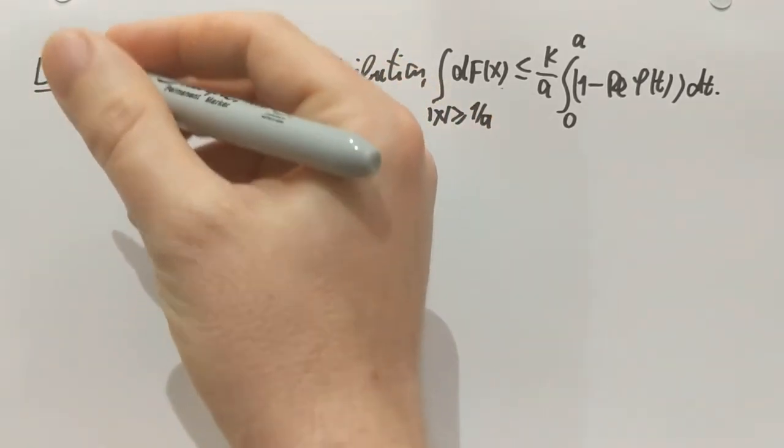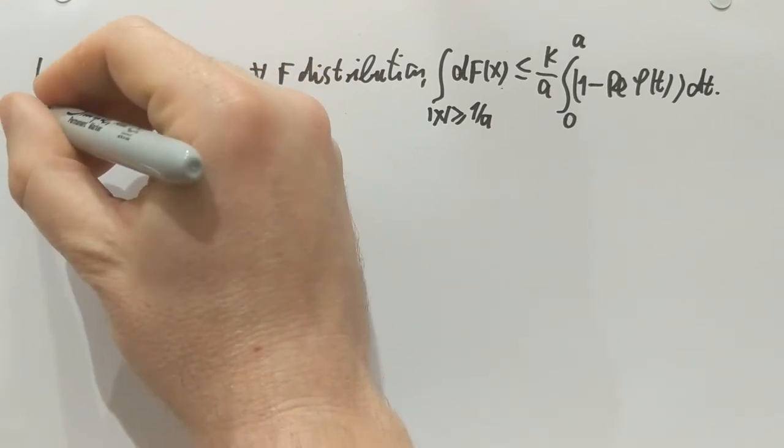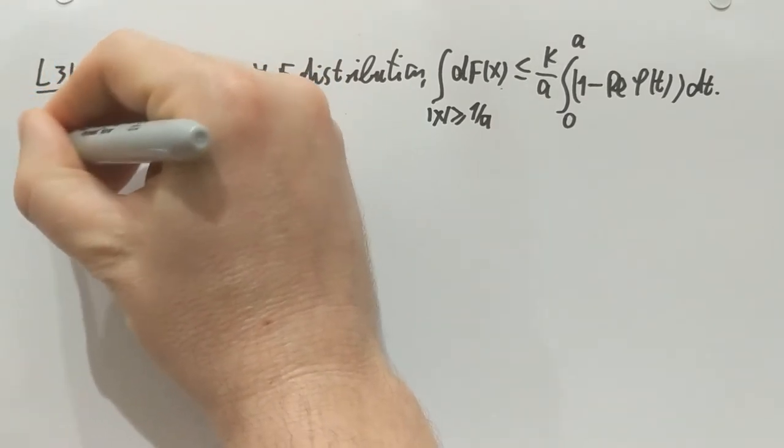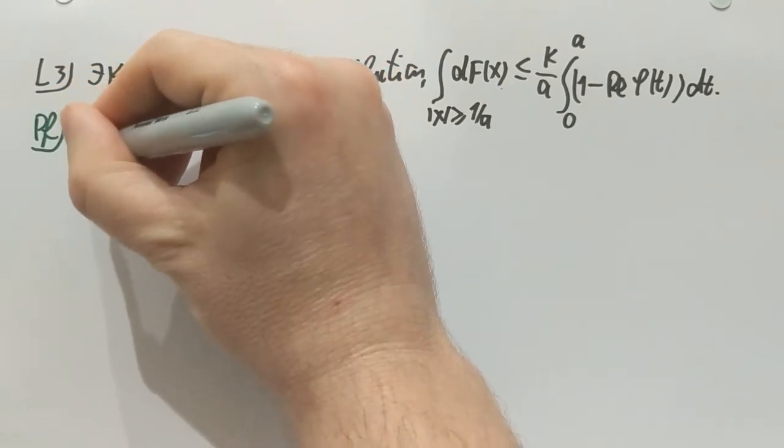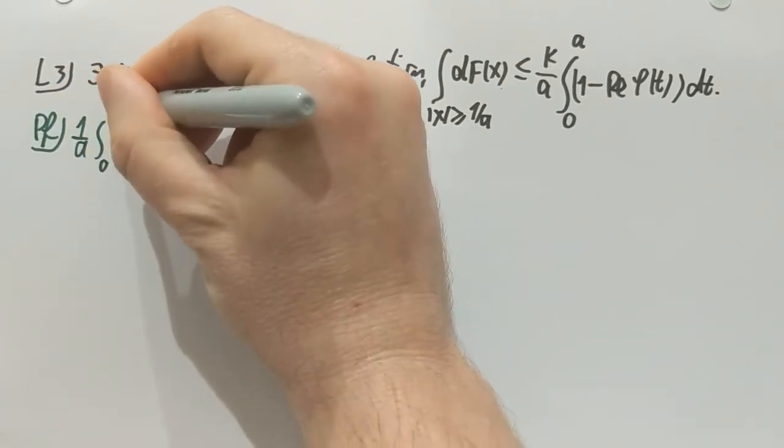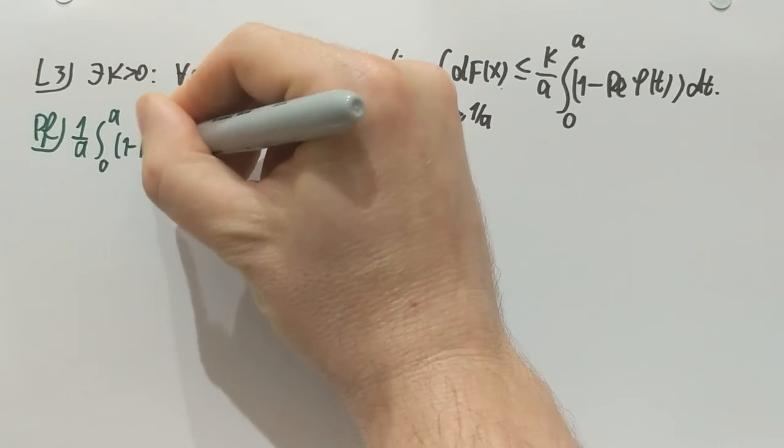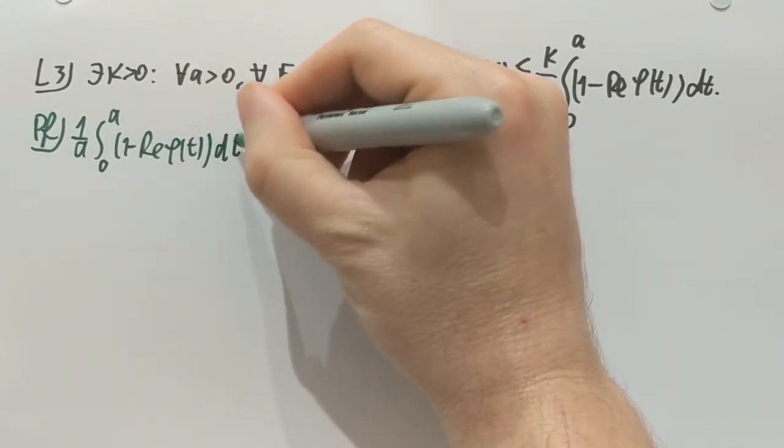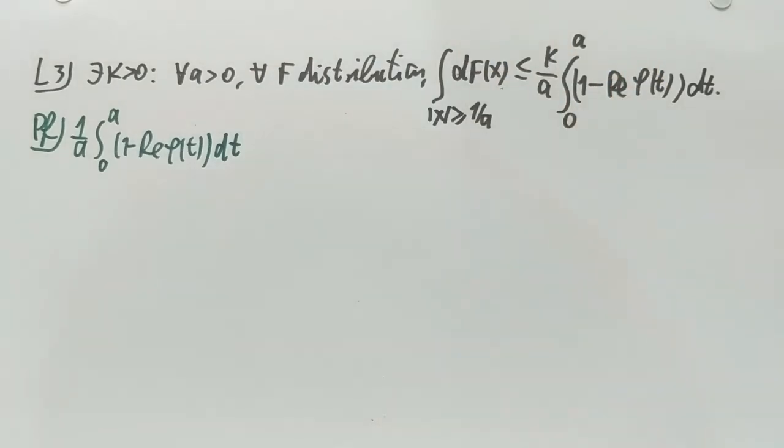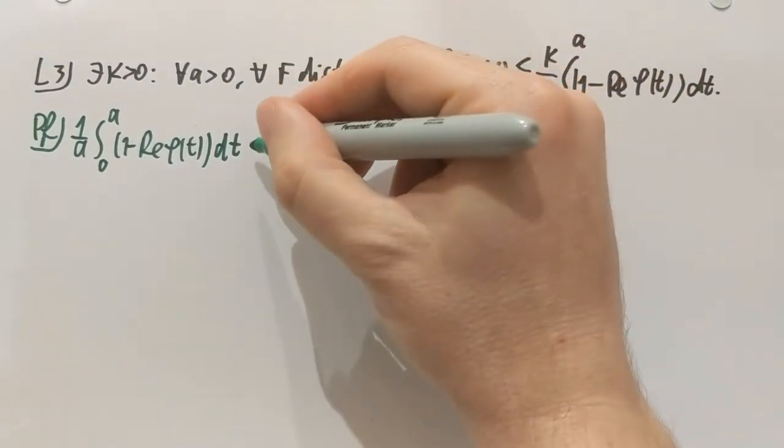Let's start writing essentially the right hand side. So let's start writing 1 over a, integrate from 0 to a, 1 minus real part phi dt. It's the right hand side except for the number k.